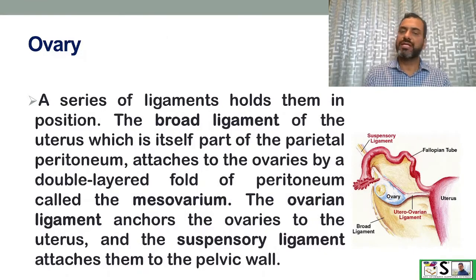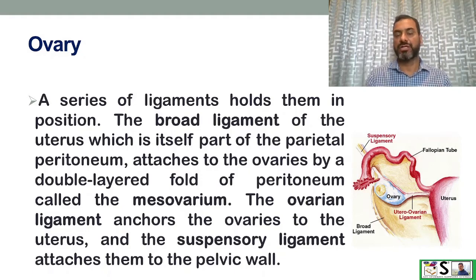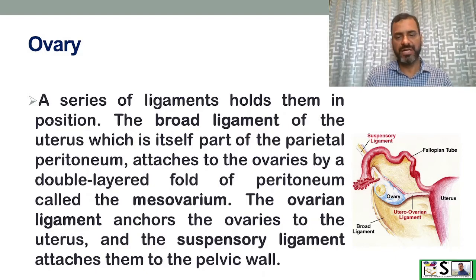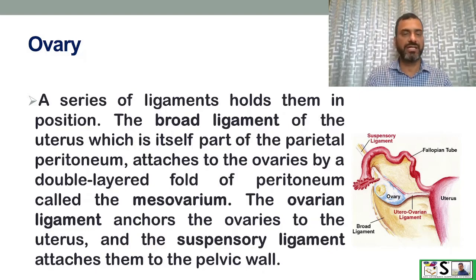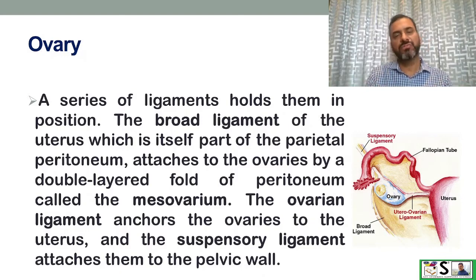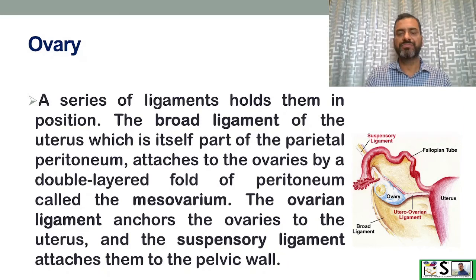A series of ligaments hold the ovaries in position. The broad ligament is a part of the parietal peritoneum that attaches to the ovaries by a double-layered fold of peritoneum called the mesovarium. The ovarian ligament anchors the ovaries to the uterus, and the suspensory ligament attaches them to the pelvic wall. So there are three ligaments: the broad ligament, ovarian ligament, and suspensory ligament.